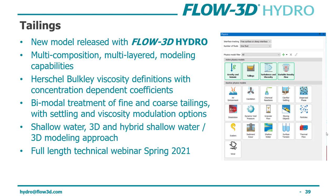A new model released in Hydro is the tailings model — we'll have a much more in-depth technical webinar in late January or early February 2021. This model allows you to model tailings in detail using multi-layered, multi-composition definitions. Herschel-Bulkley is used for viscosity definitions, and it's an expanded version where coefficients can be defined as a function of fine tailings concentration. It uses a bimodal treatment differentiating between fine and coarse particles, with settling and viscosity modulation options. The model can be used as a 3D, shallow water, or hybrid shallow water-3D solution.